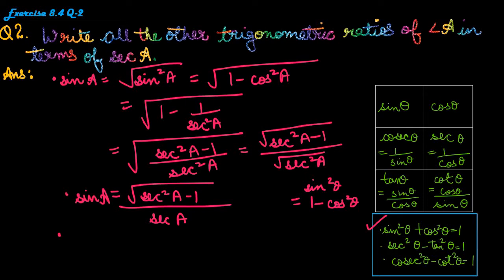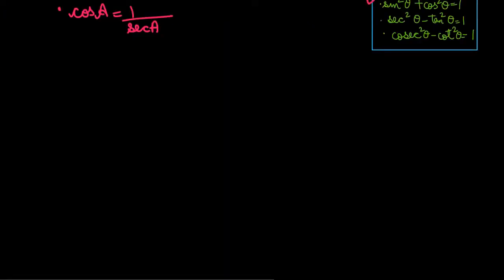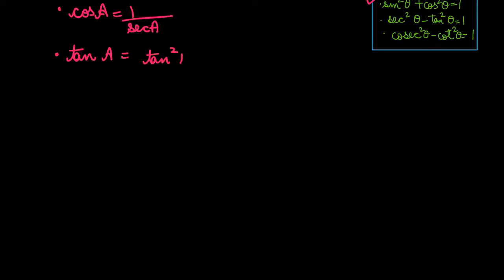Next, the trigonometric ratio cos A. Cos A = 1/sec A. So we have also converted cos A into the form of sec A.